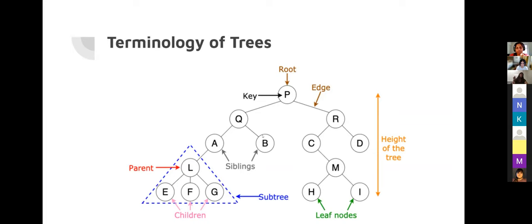Quick question: is B a leaf node or a non-leaf node? [Answer: a leaf.] That's right. The height of a tree is the maximum level you can go. Any node with the highest number of children below it defines the height. For our tree, the P node has four children below it, so the height is four starting at index zero, or five starting at index one.